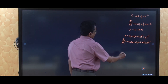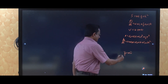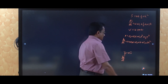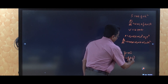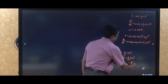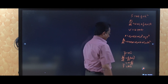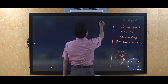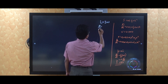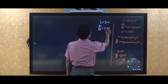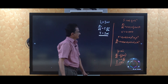If momentum p equals mass times velocity, we find dp by dt — the rate of change of momentum at an instant. Taking d/dt of mv: since m is constant, this equals m times dv by dt. But dv by dt is the instantaneous acceleration, so dp by dt equals m times a. This is Newton's second law: F equals ma. Similarly, for angular momentum L equals I omega, differentiating gives dL by dt equals I times d omega by dt equals I times alpha, the angular acceleration. So dL by dt equals torque tau equals I alpha.